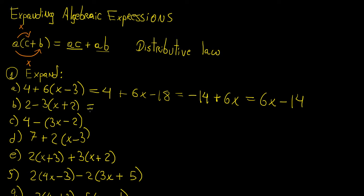For this one, we're going to have 2 minus 3 times x, which is 3x, minus 3 times 2, which is minus 6. And now we have minus 3x minus 6 plus 2, that's minus 4. So that's going to be our result.